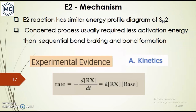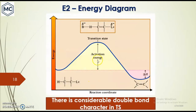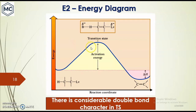E2 reaction has an energy profile similar to SN2 — it is a concerted process that generally requires less activation energy than sequential bond breaking and bond formation. Kinetic studies confirm that the rate depends on both the concentration of the substrate and the base. In the transition state, the base has started to break its bond with hydrogen, a C–C double bond is forming, and the leaving group is departing. The considerable double bond character in the transition state lowers its energy.